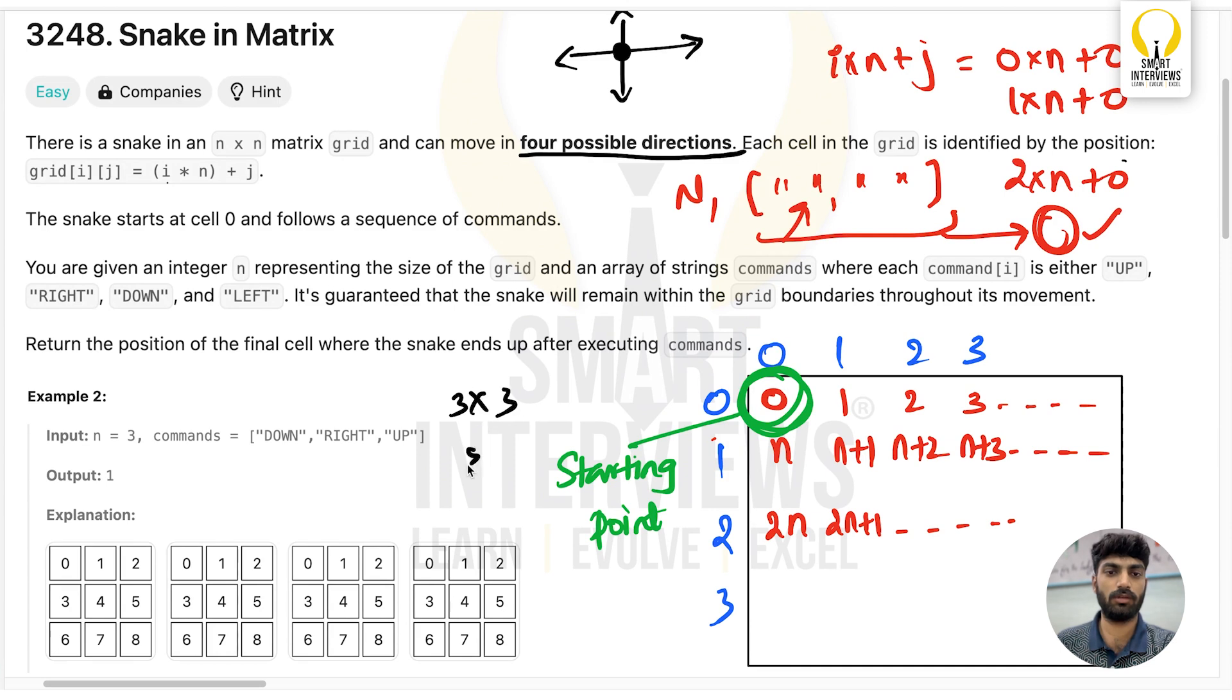The commands are: the first command is DOWN, so starting from 0, you go to the cell below it. Next command is RIGHT, you go to the right cell. Then you go UP to this cell. So you'll return 1 as the answer.